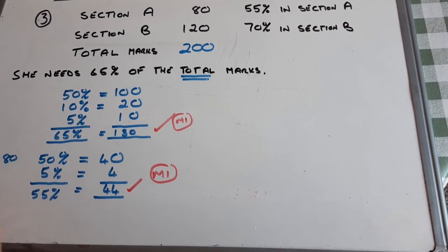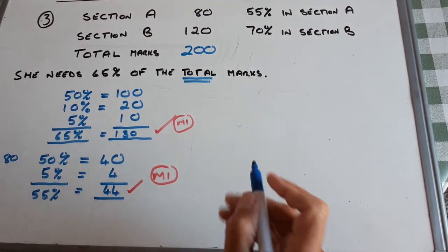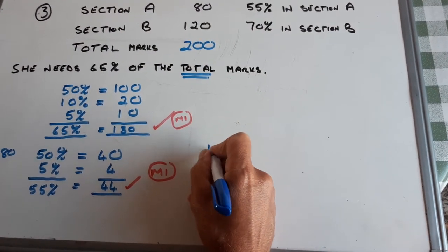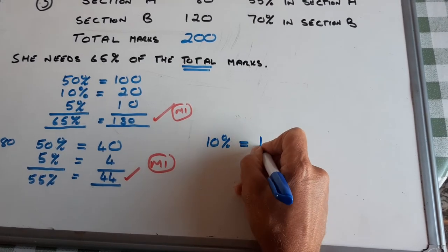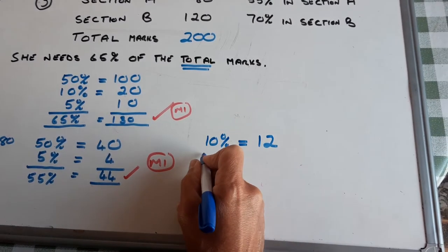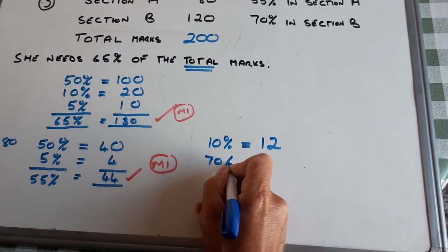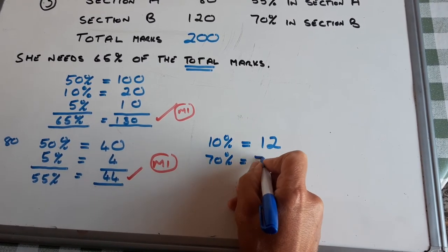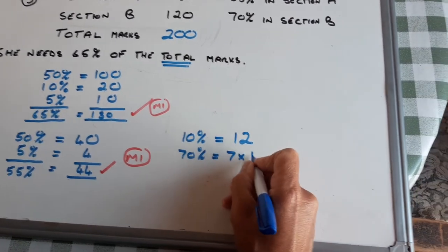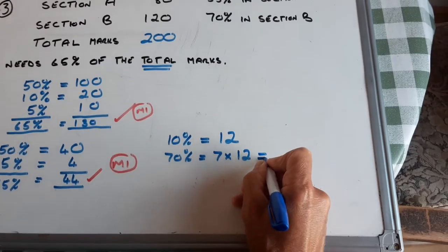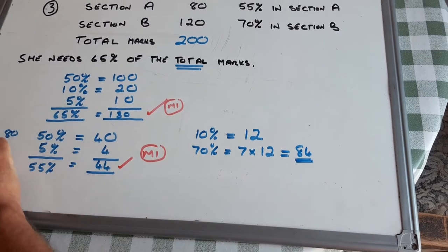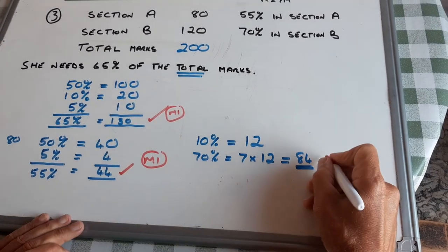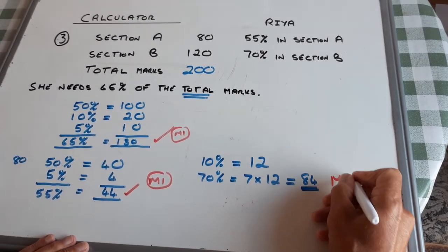70% of 120. 10% is 12, 70% is 7 times 12, 84. And I'm giving myself the third mark for that.